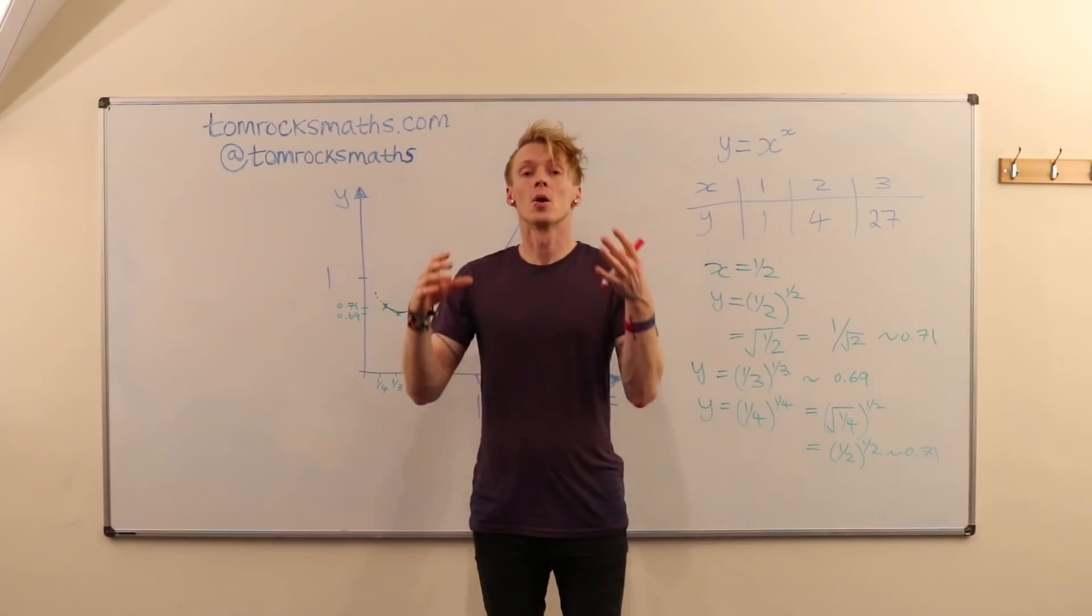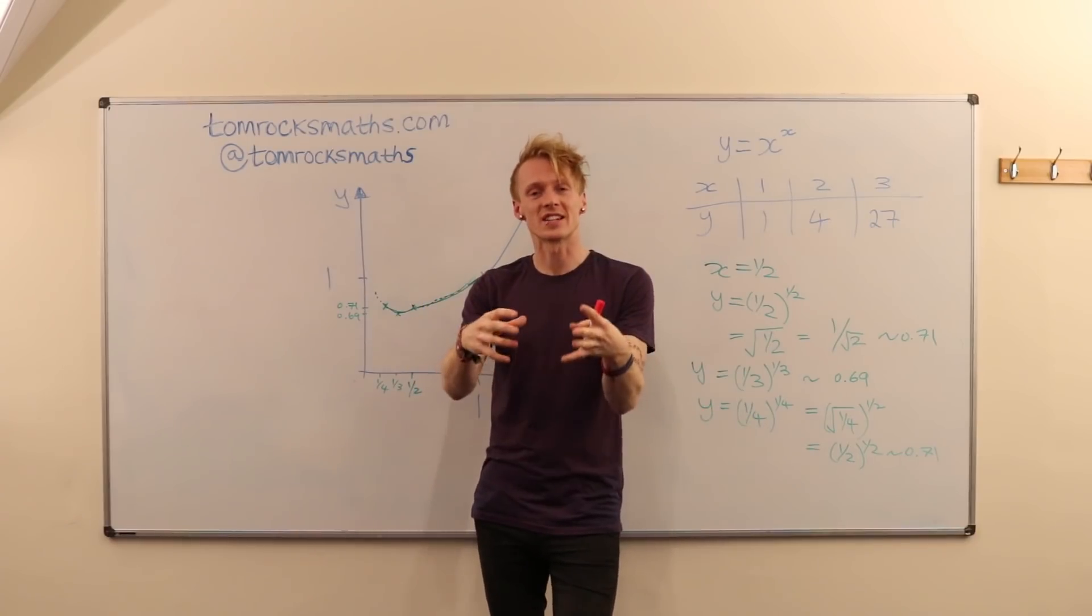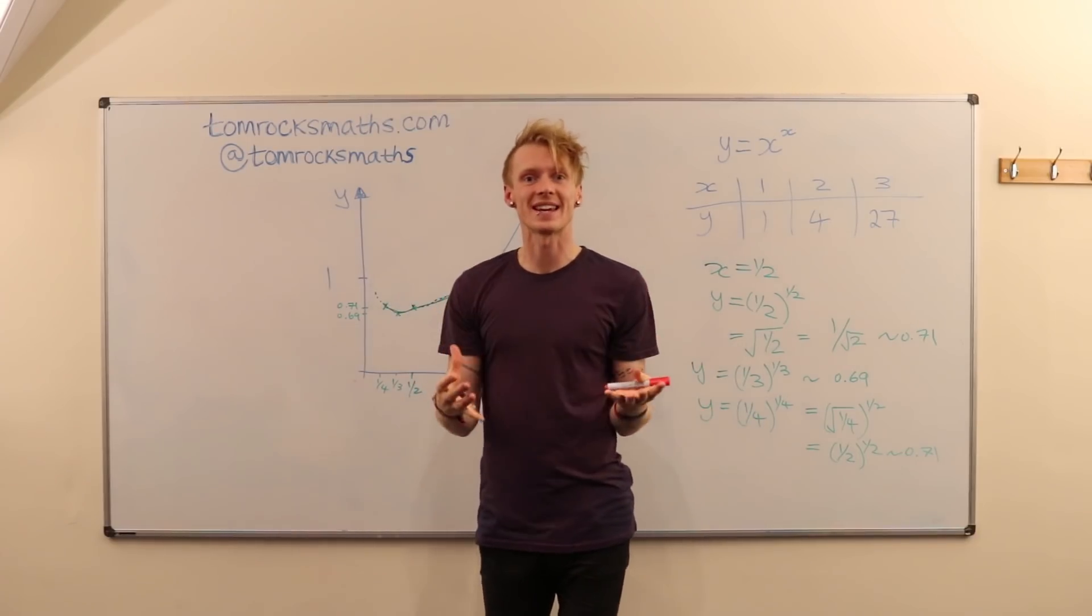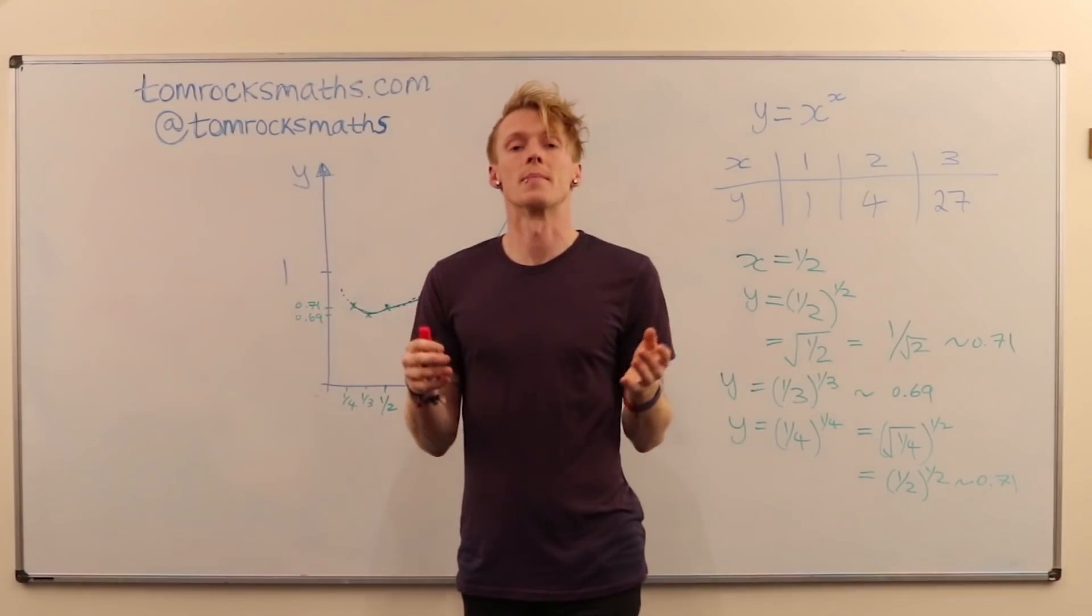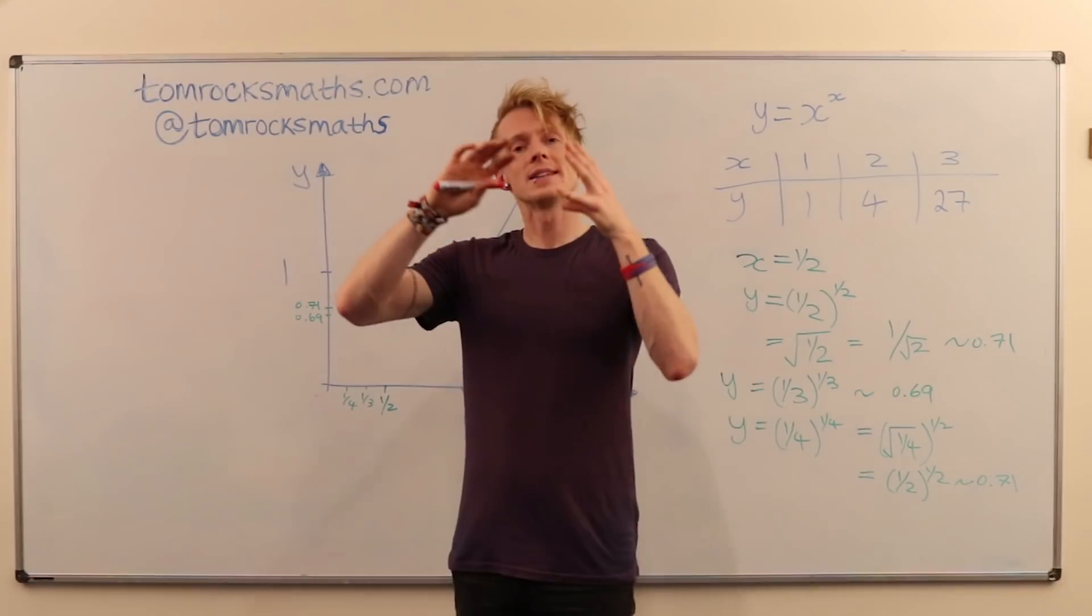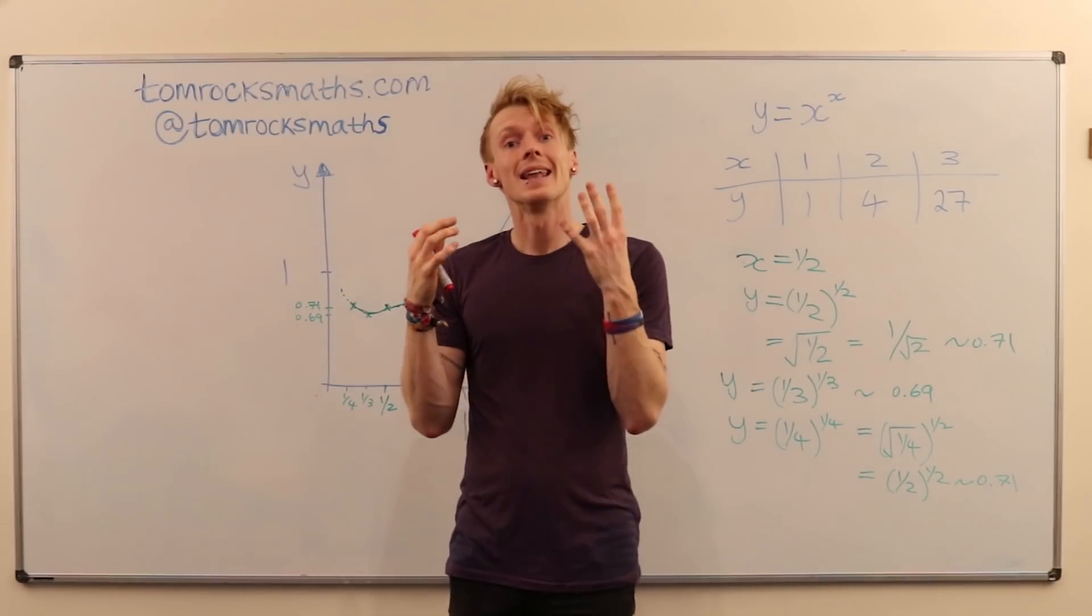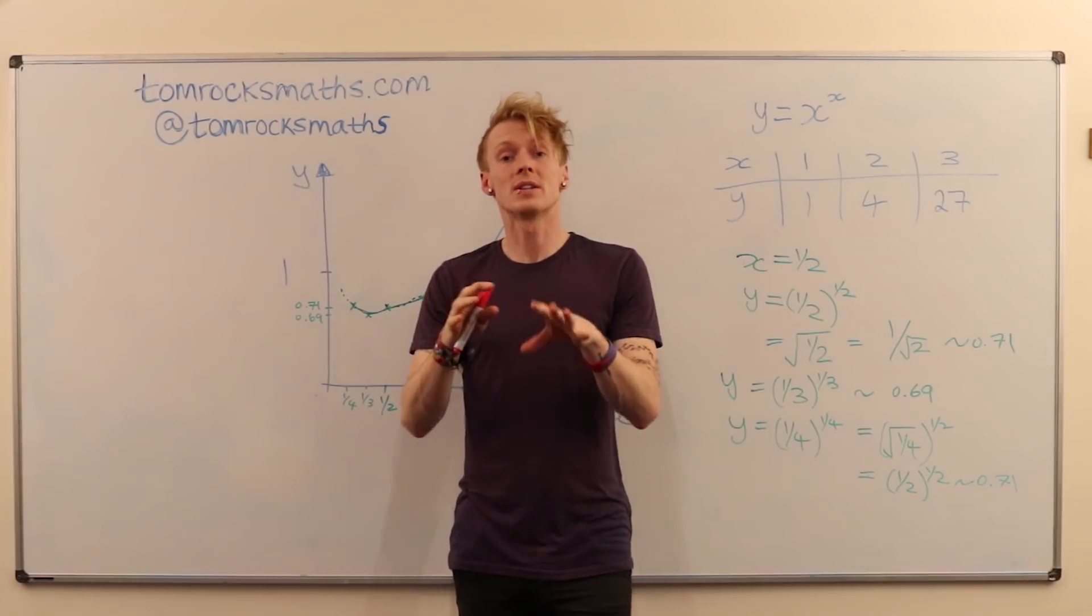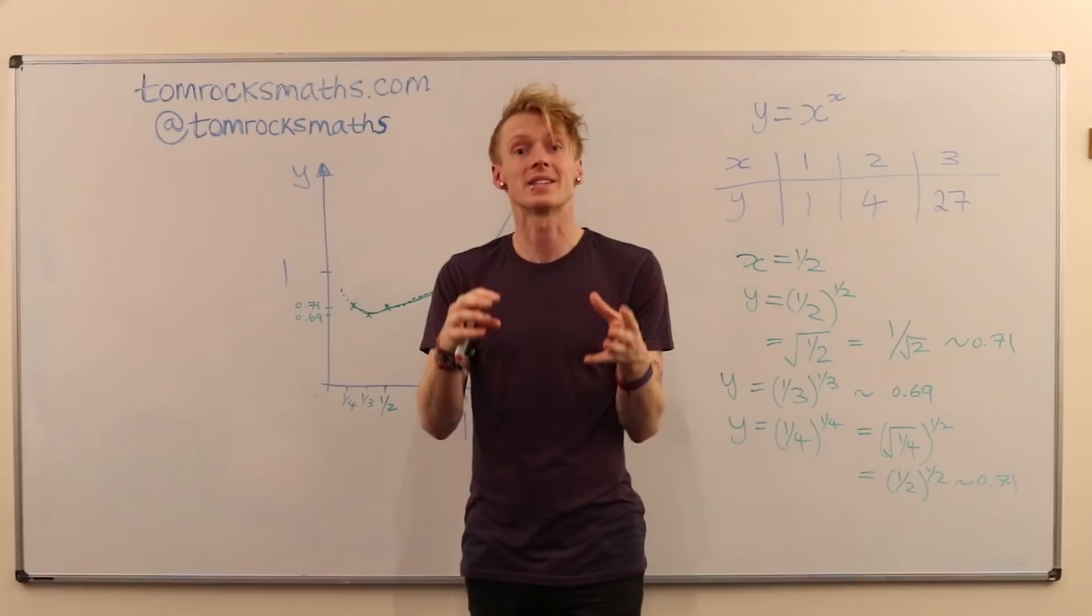To answer that question, we're going to consider a simpler example. And again, use that knowledge and understanding to help us with the trickier case of 0 to the power 0. So let's consider the number 2. And to take 2 to the power 0, you actually have to take a limit. But don't worry, we don't need to go into that level of detail. It's just a case of spotting the pattern.